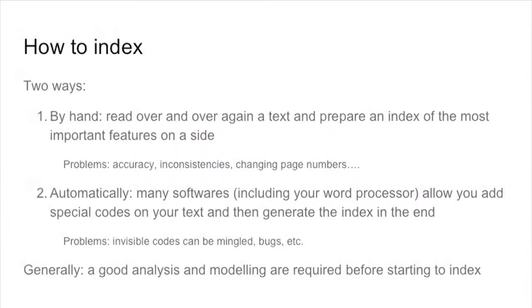The other possibility is doing it automatically. Many software, including your favorite word processor, offer you a way for generating an index automatically, meaning that you have to add some normally invisible codes inside your text, and that enables the software to automatically generate the index. If you change something, it's automatically updated. The problem with this approach is that sometimes, particularly if you use a word processor, the codes are invisible and you risk mingling with them — they're not very easy to manage, and there are lots of bugs. But it is a smarter way of doing it, because everything you can ask a computer to do automatically for you is better done automatically.